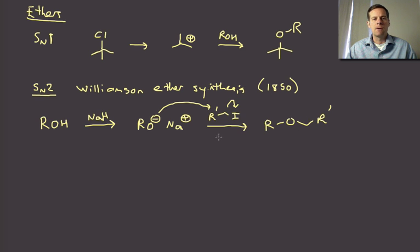And you will then do an SN2 of the alkoxide to the iodide in this case. And you form your ether, right? So that works out pretty well. And of course, instead of the iodide, we could also use an alkyl bromide. Or we could even use, in many cases, the tosylate.